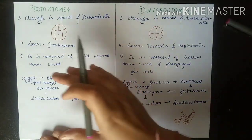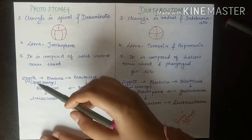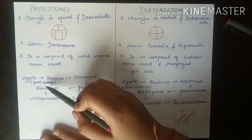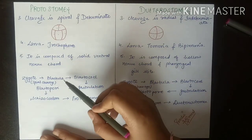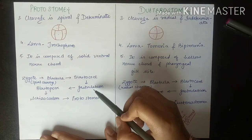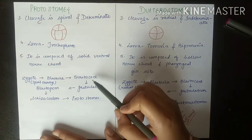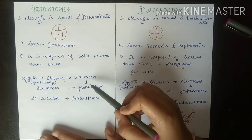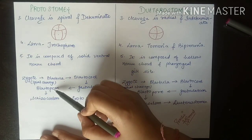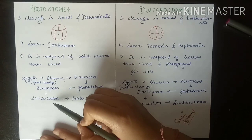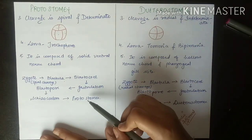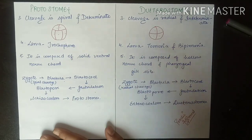Here is the formation of a developmental chart. For protostomes: first a zygote undergoes spiral cleavage, then a blastula is formed, followed by a blastocoel, then gastrulation. This is the embryology stage, which we will study in further videos. After this, the blastopore is formed, then schizocoelom is formed by splitting of the mesoderm, and finally the protostome is formed.